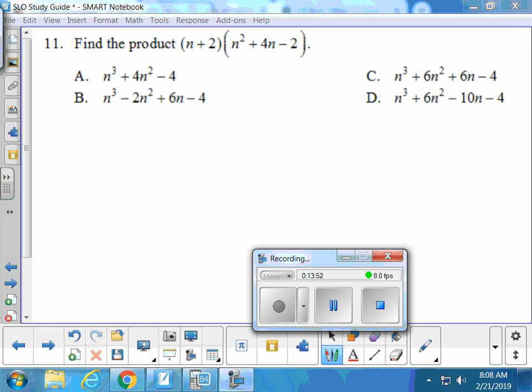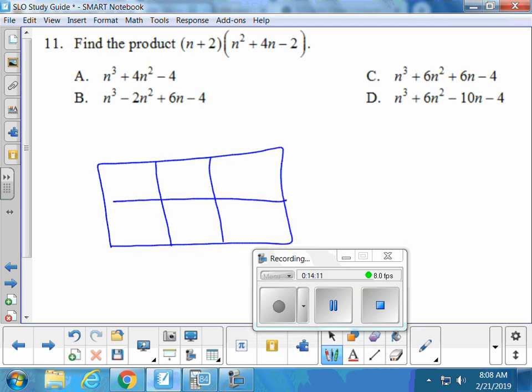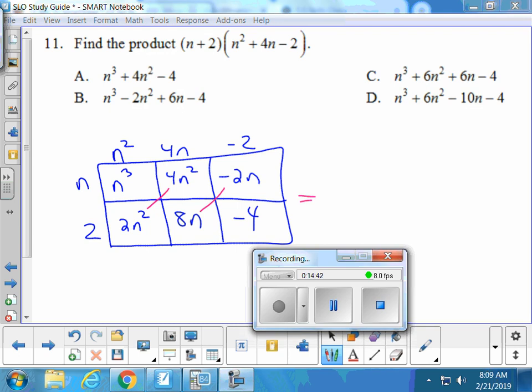Number 11. Are we going to do the rainbows or are we going to draw a box to do distributing? Box. All right, so it would be a 3 by 2 box. If you want to do rainbows, that's fine. So you'll have n plus 2, n squared plus 4n minus 2. So n cubed, 4n squared, negative 2n, 2n squared, 8n. Am I going too fast? No, not at all. I'll let you check that all those are okay. Let's finish and add our like terms. It would be n cubed, 6n squared, 6n and negative 4. Which answer is it looking like? I agree. Yep.